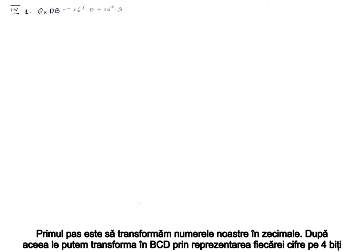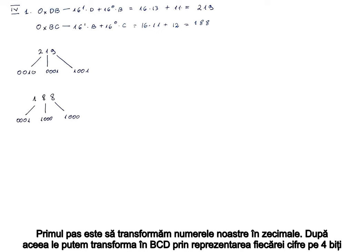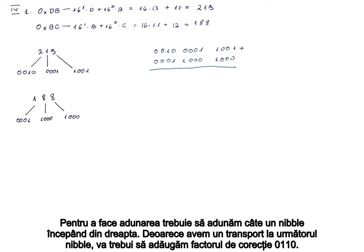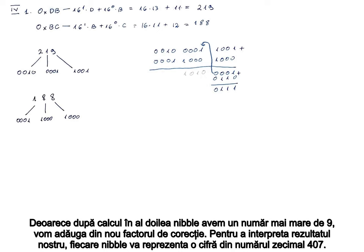The first step is to transform our numbers into decimal. After that, we can transform them into BCD by representing each digit on 4 bits. To make the addition, we have to add nibble by nibble starting from the right. Because we have a carry to the next nibble, we're going to have to add the correction factor 0110. Because after the computation in the second nibble we have a number greater than 9, we're going to add the correction factor again. Each nibble will represent a digit of the decimal number 407.